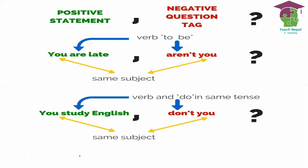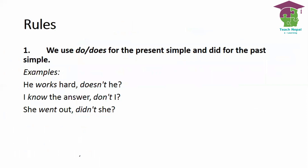We need to find out which is the auxiliary verb form and contract it. If the verb is a main verb rather than an auxiliary, then we have to write the 'do' form in the tag question. The rules are given here and you can see them.